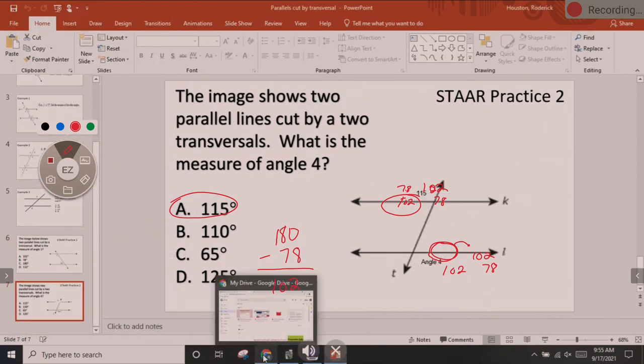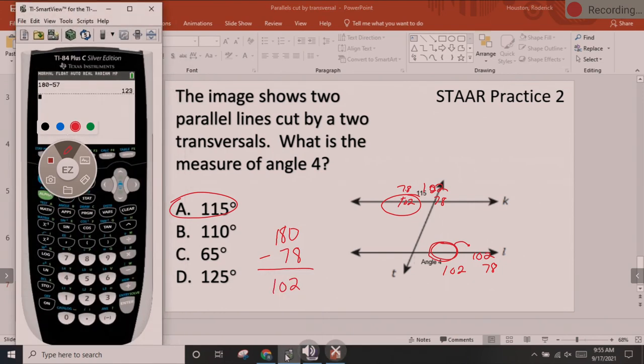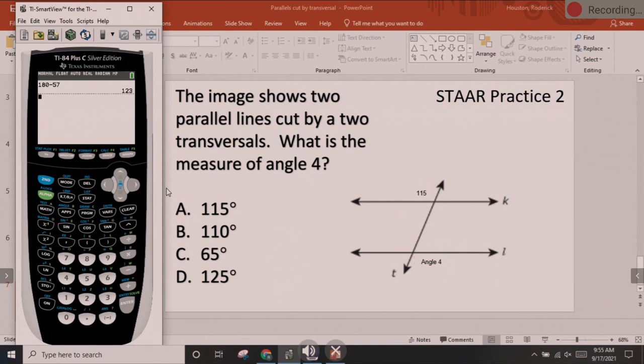One last example with you here just to make sure we solidify it and hit it home. So the image shows two parallel lines cut by a transversal. What is the measure of angle 4? So here we have 115 and they want us to find angle 4 down here at the bottom. Well, what I'm going to do is I'm going to immediately find the acute that's next to it. We're going to do 180 minus 115.